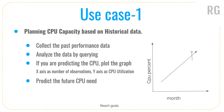Let's talk about use case one: capacity planning for the CPU. Let's say you have a system and your CPU is currently at 20% usage, and going forward it is going to increase. We want to predict what CPU capacity will be required in the future. We know the current load and the historical load, maybe from the past year.